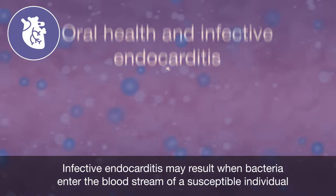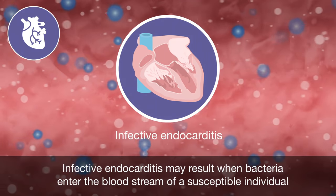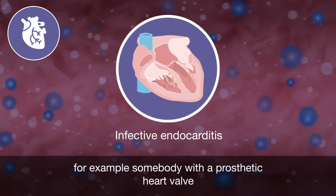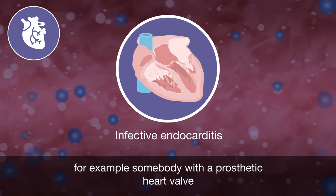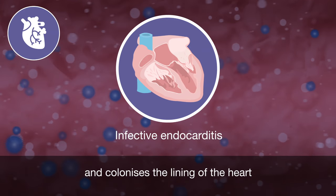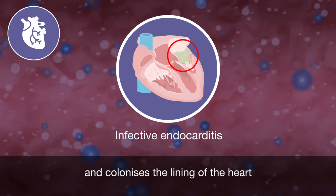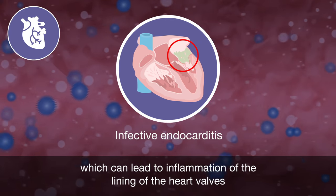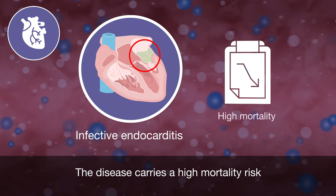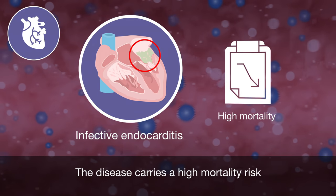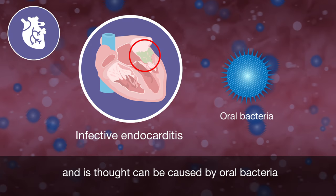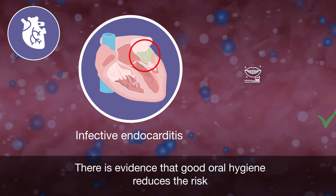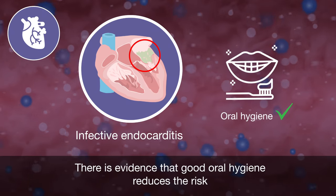Infective endocarditis may result when bacteria enter the bloodstream of a susceptible individual, for example somebody with a prosthetic heart valve, and colonises the lining of the heart, which can lead to inflammation of the lining of the heart valves. The disease carries a high mortality risk and it's thought it can be caused by oral bacteria. There is evidence that good oral hygiene reduces the risk.